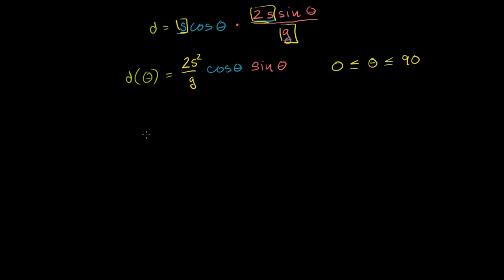Just to get an idea of what we're conceptually doing with the calculus: when you take a derivative, you are finding the instantaneous slope of a line. And if you were to graph this — I encourage you to graph it on your own, maybe with a graphing calculator — it will look something like this over the interval, where that is the distance as a function of theta axis, and this would be our theta axis.